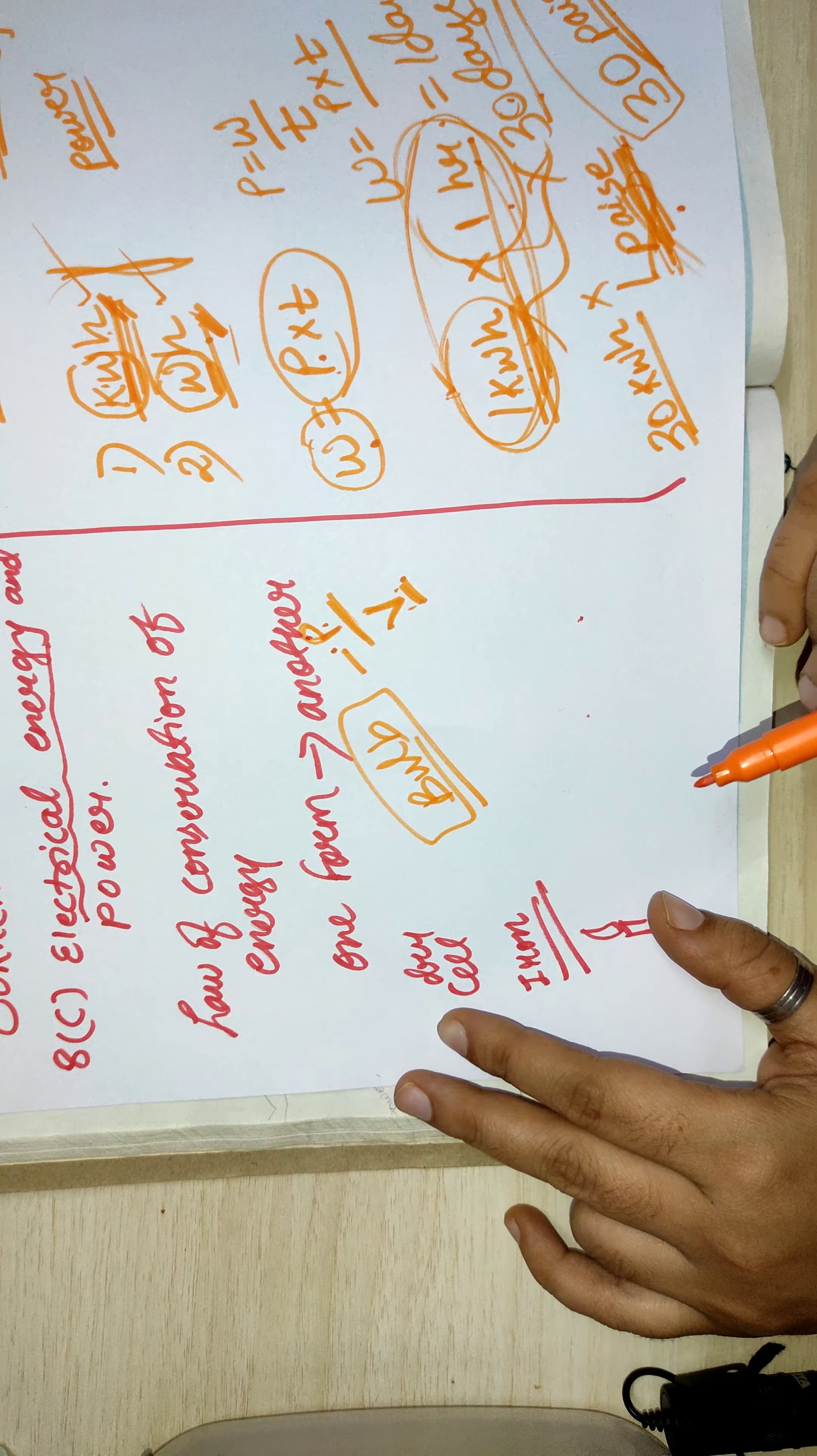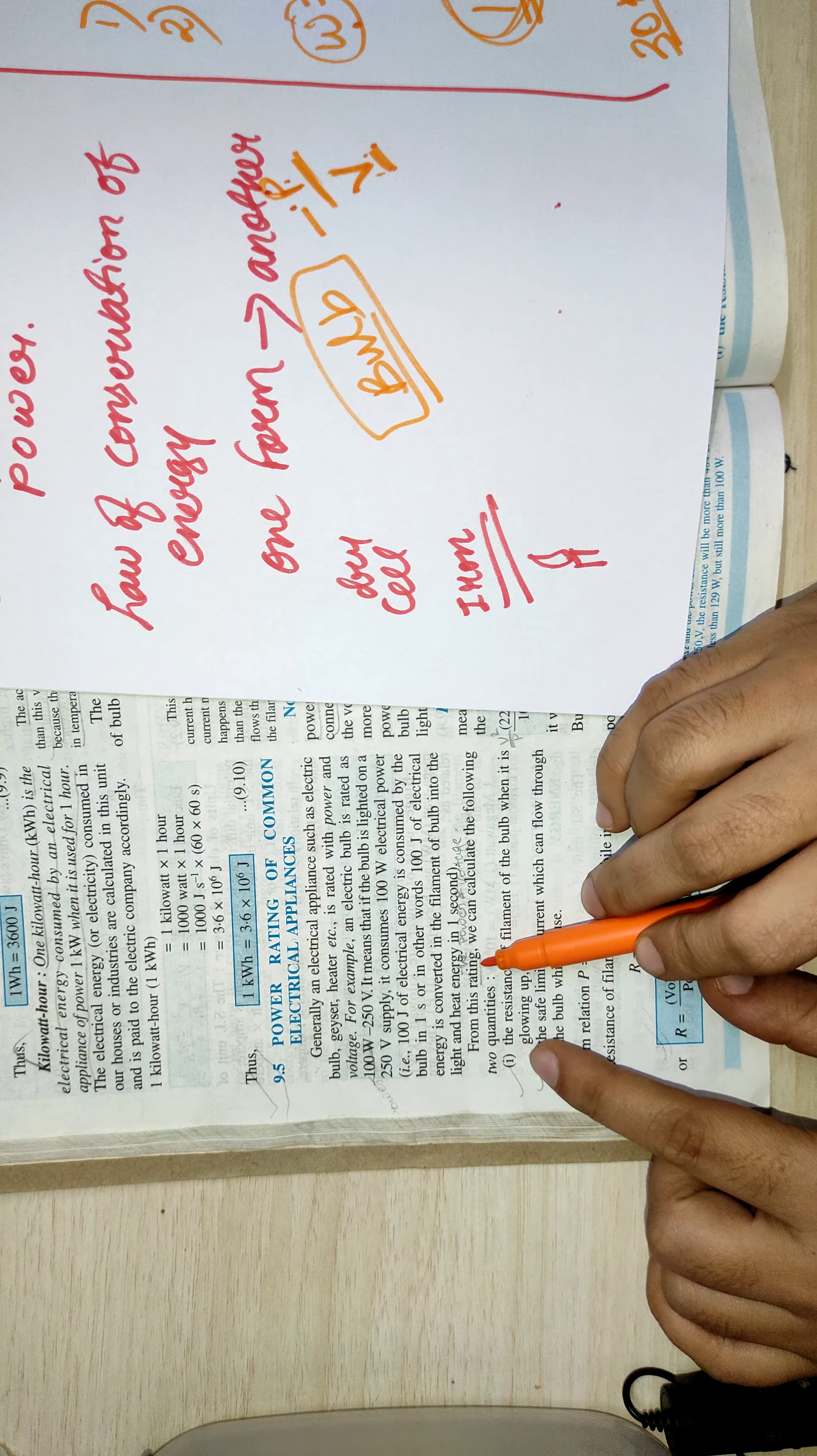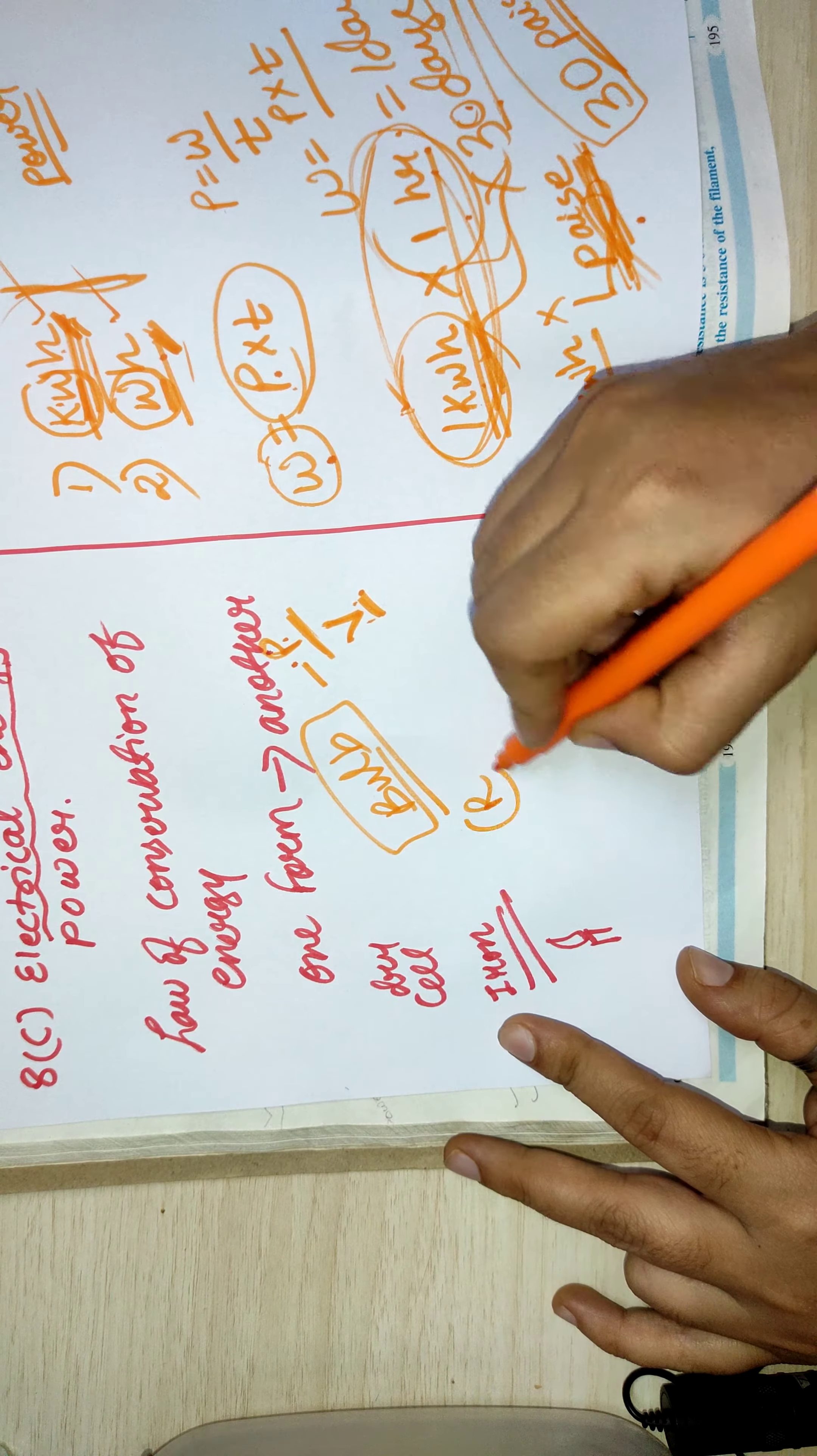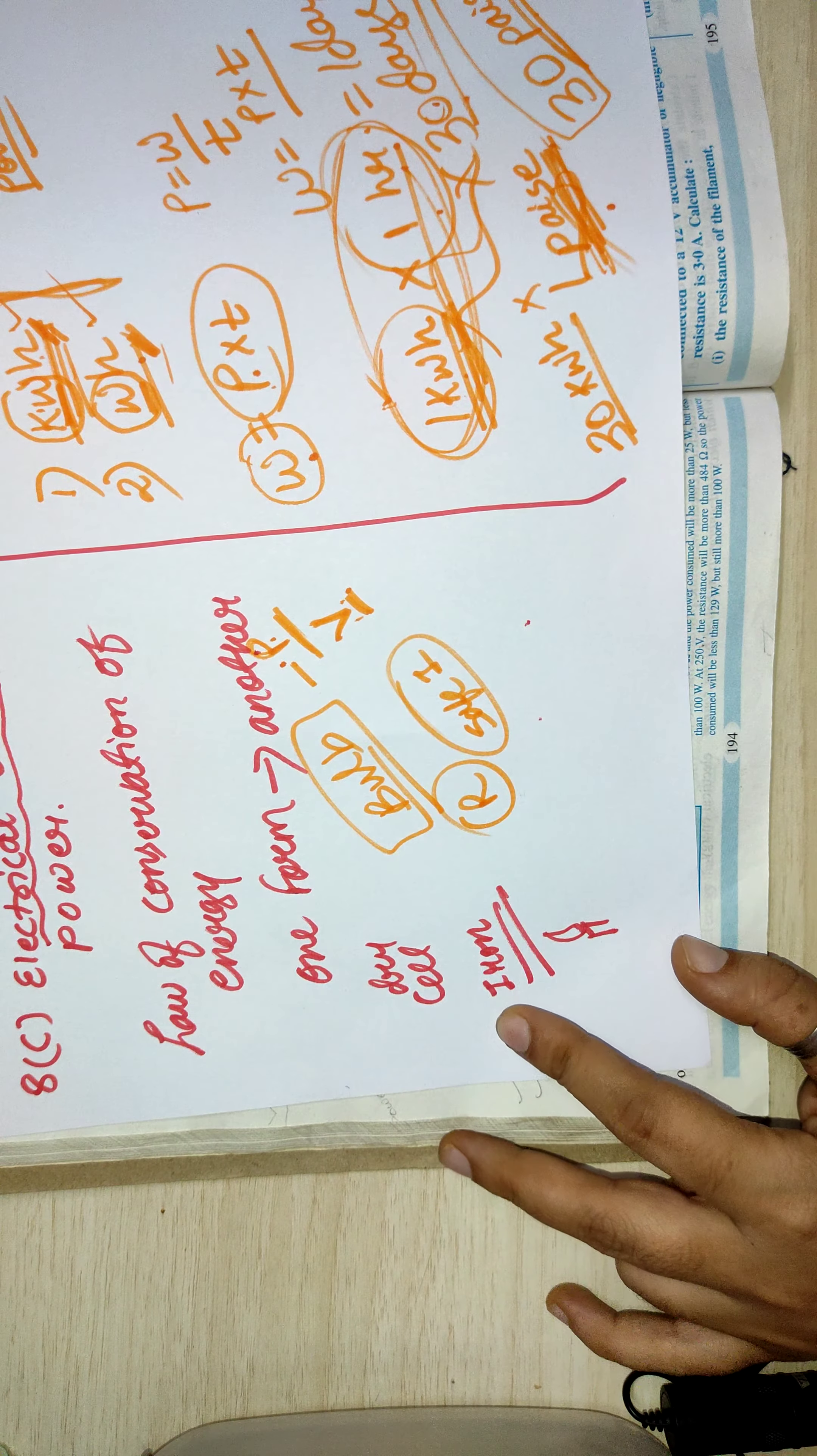So what do we need to study here? From this rating, what all you can calculate. From this rating you can calculate two more quantities: first you can calculate the resistance, and second you can calculate the safe current.